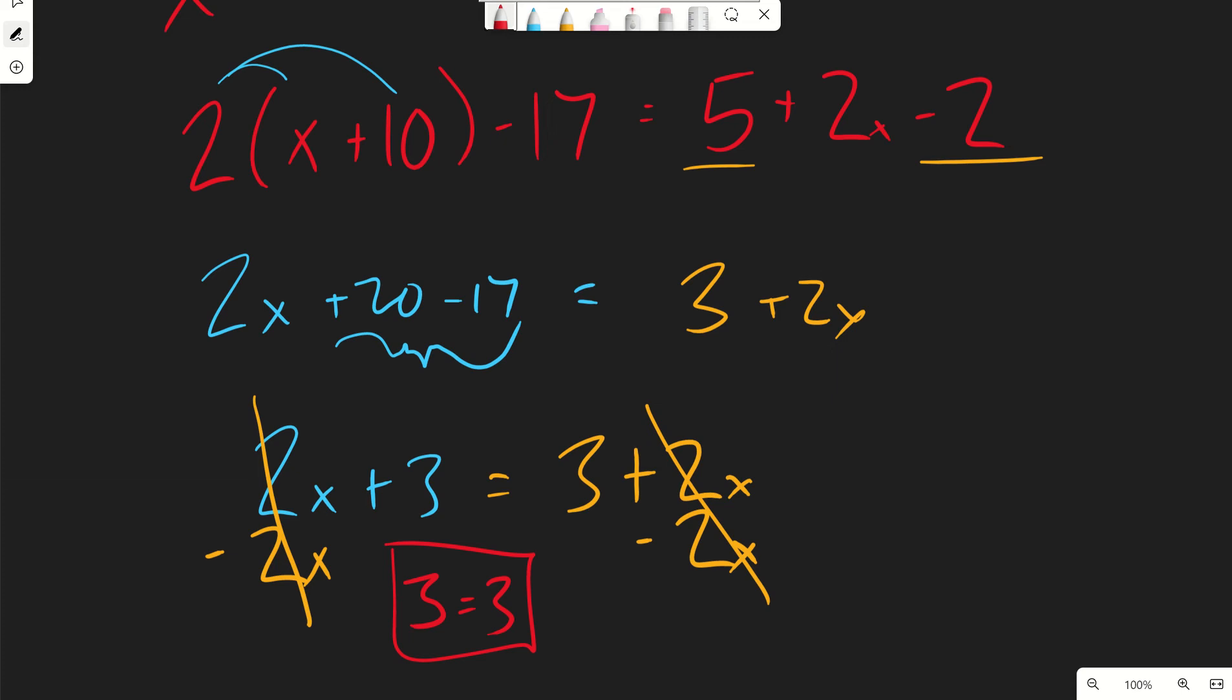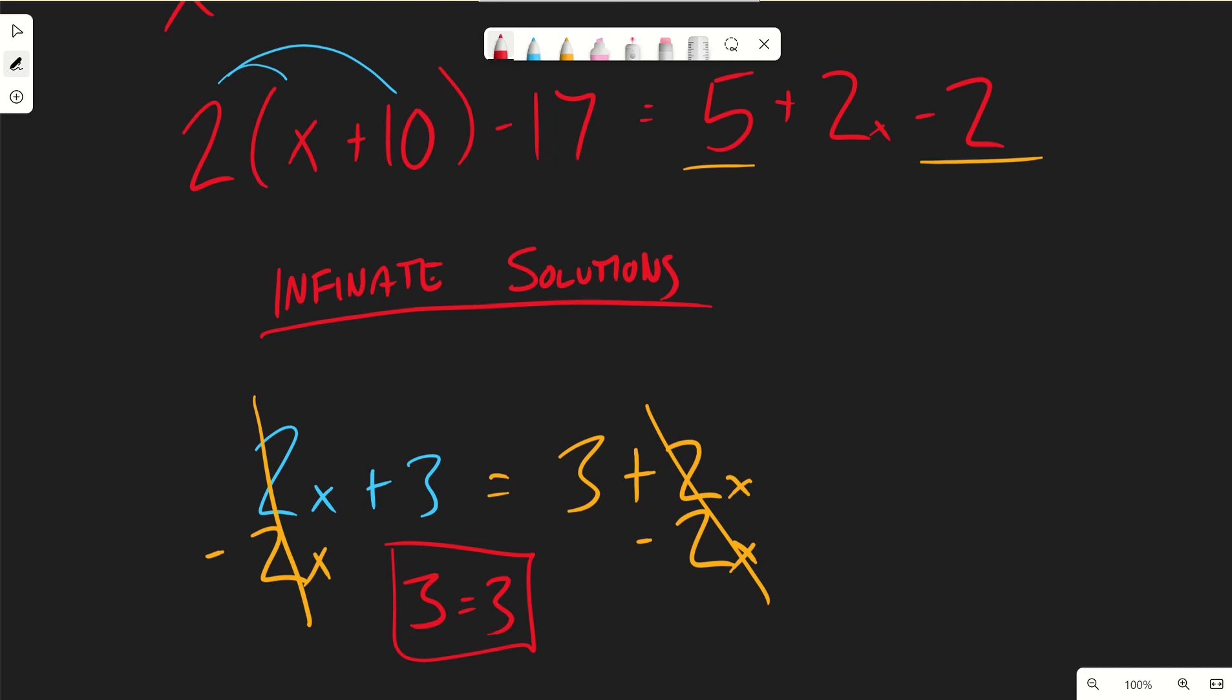And that's fine. That's actually what we're trying to get to here. We're trying to get to this point. We're trying to get rid of our variables and just look at our numbers. And when we have 3 equals 3, what that means is we have infinite solutions to this problem. Because I simplified both sides down, and I got to a number equals that number. That means that even though both of my sides were written differently, both of my sides are the same. And I can put any value into x, and it will give me the same answer.